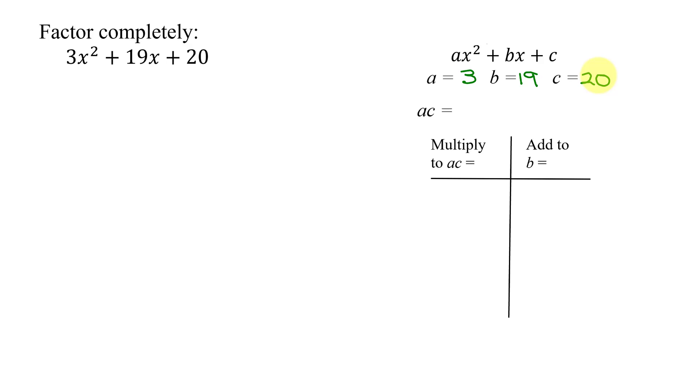Now, I am going to factor this using the AC or grouping method. So I multiply a times c, that's 3 times 20, 3 times 20 is 60, and I need to find two numbers that multiply to ac, which is 60, and add to b, which is 19.